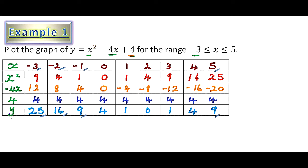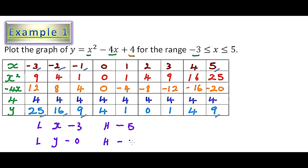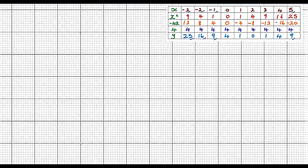Before we plot the graph, we need to identify the range: the lowest value of x is -3 and the highest is 5; the lowest value of y is 0 and the highest is 25. This guides us in setting up our Cartesian plane so we know how high the y-axis needs to go and how far horizontally the x-axis extends.